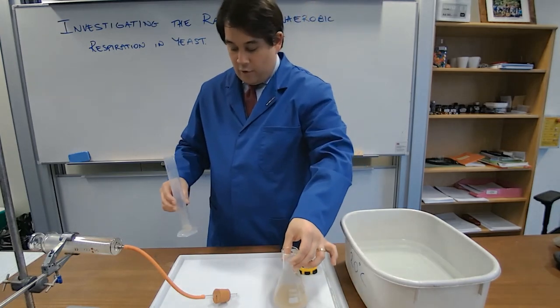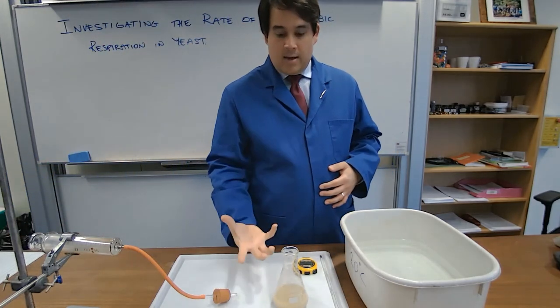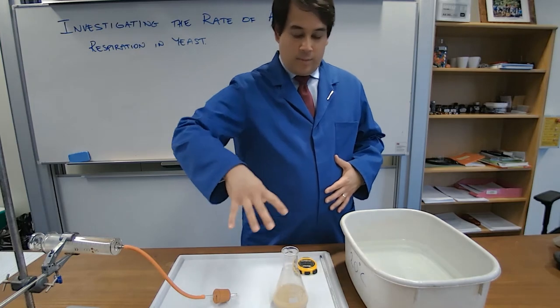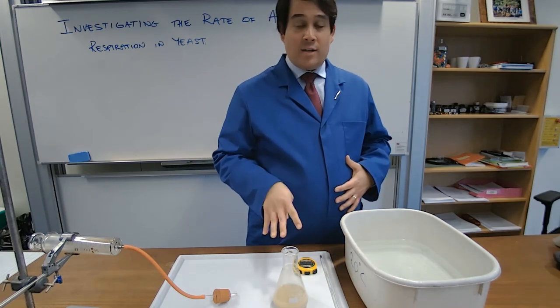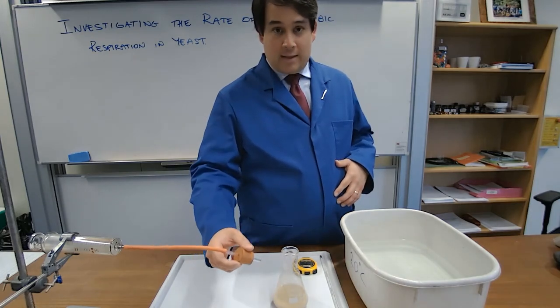Now, this layer of oil on top of the yeast should prevent any oxygen from going through it in that way because there's not too much pressure. However, any carbon dioxide generated by the yeast will come through it and we will then be able to collect it there.